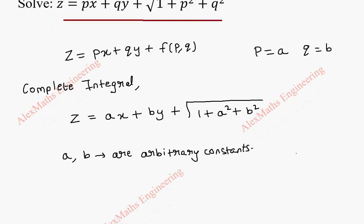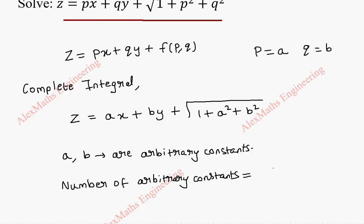Here, we find the number of arbitrary constants is 2, and the number of independent variables is also 2. The independent variables are x and y. In this case, the number of arbitrary constants equals the number of independent variables.